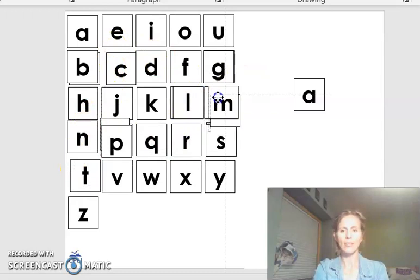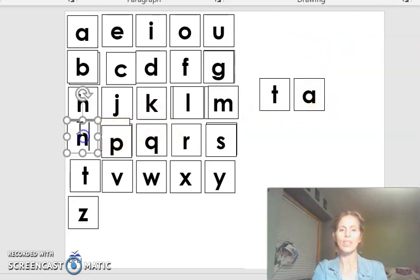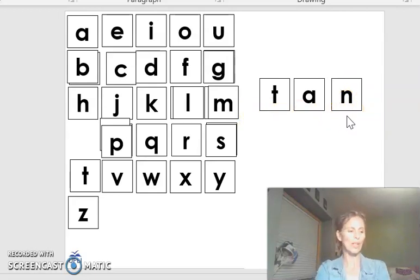Let's try it. We have T, A, blend it together, ta. And then we have nn for the end. Tan. The word is tan. Nice work.